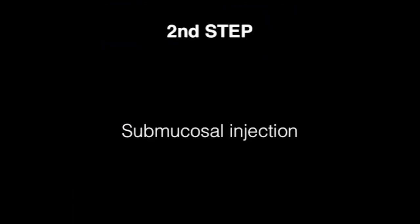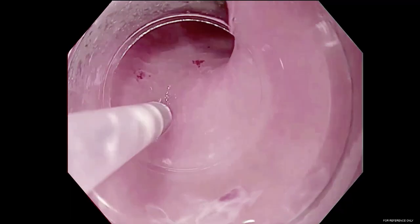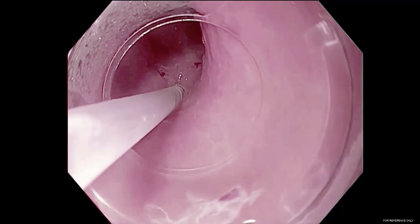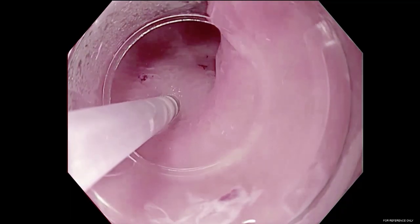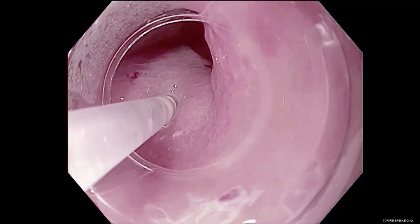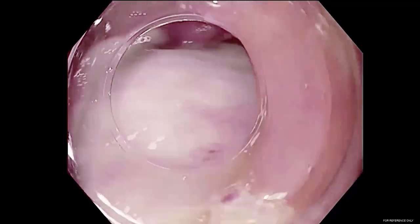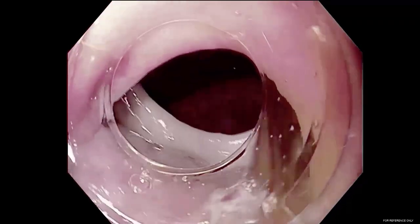The second step is the submucosal injection. We checked the stenosis and performed the injection 5 cm proximal to it. We used an injector needle and injected 40 ml of saline with a very light solution of methylene blue without epinephrine.